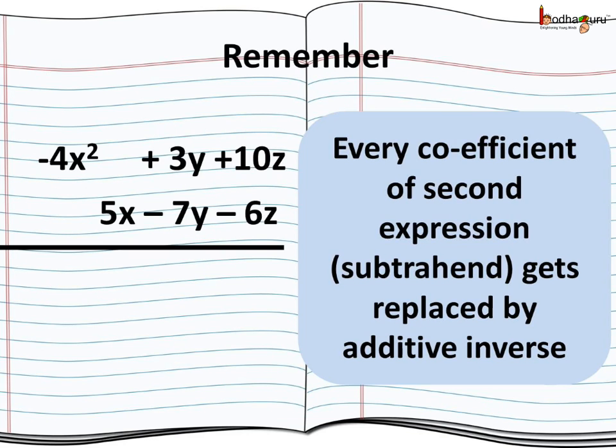So, let us revise how to do the subtraction of algebraic expressions. During subtraction, every coefficient of the second expression gets replaced by its additive inverse. So, all the signs of coefficients change. Then, we just add the like terms.